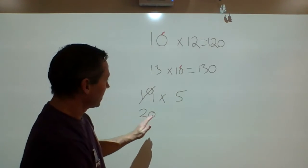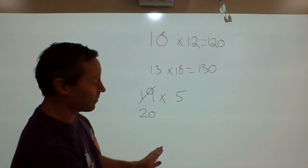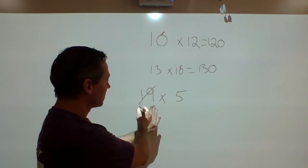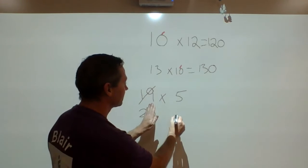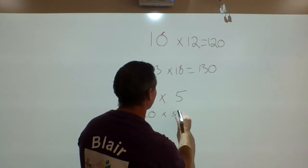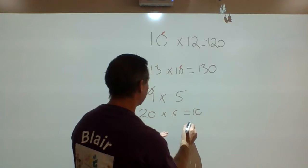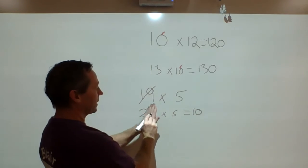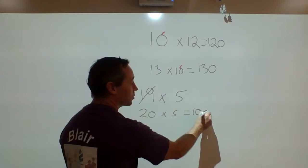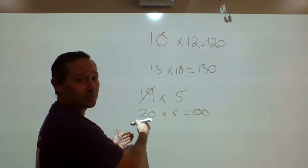Pretend it's 20. I might not know 20 times 5, but if I cover up that zero, I know 2 times 5 is 10. And if I uncover that zero, put it on the end because I'm doing 5 times 20.